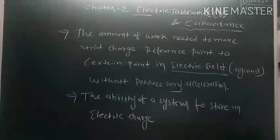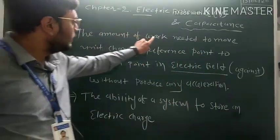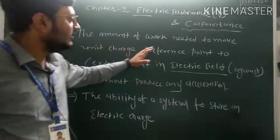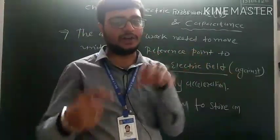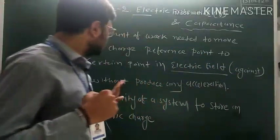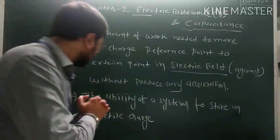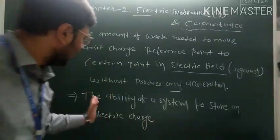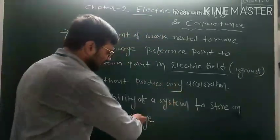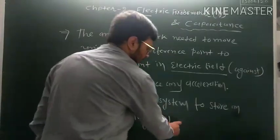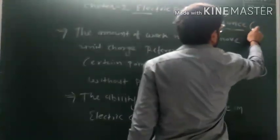Let us revise again: electric potential is the amount of work needed to move a unit charge from a reference point to a certain point in an electric field or against the electric field without producing any acceleration. Capacitance is the ability of a system to store an electric charge. Electric charge is denoted by capital Q and the symbol of the capacitor is denoted by capital C.